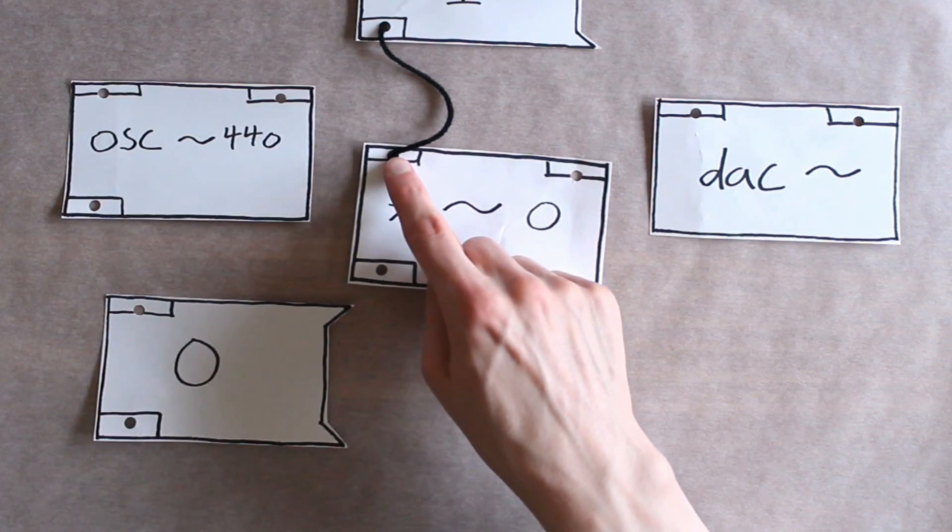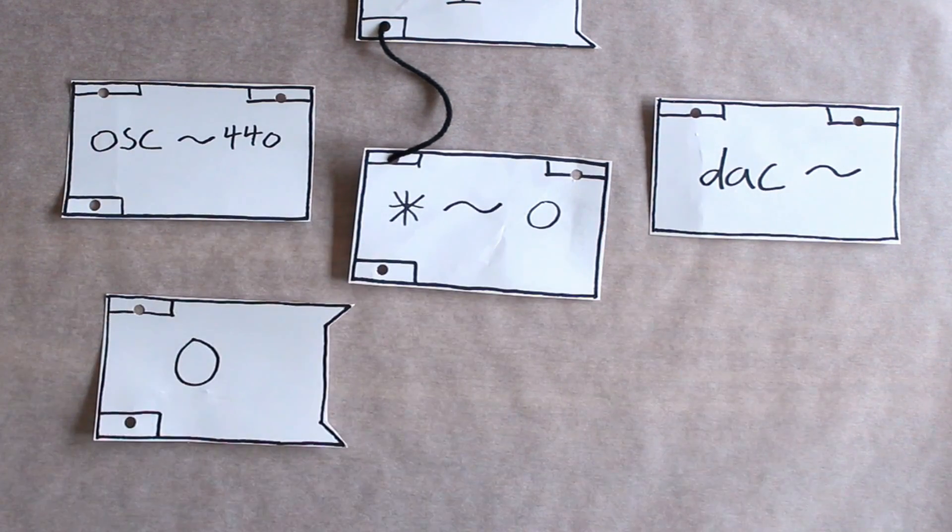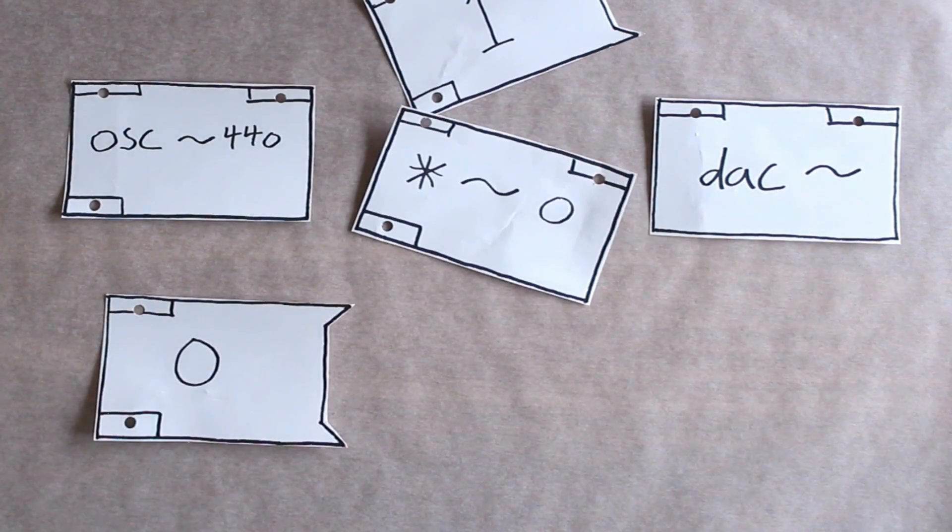Inlets are usually found on top. They are the part that takes in data. You can delete a connection by clicking on the cable and pressing backspace.